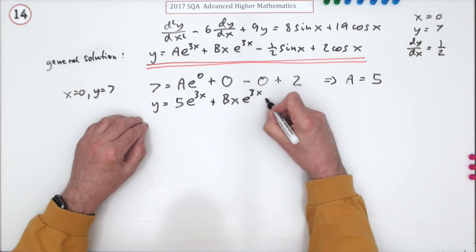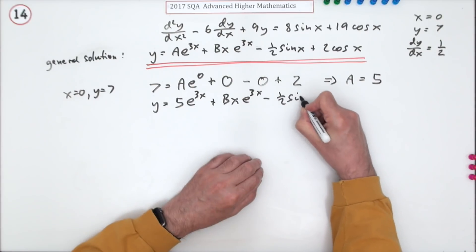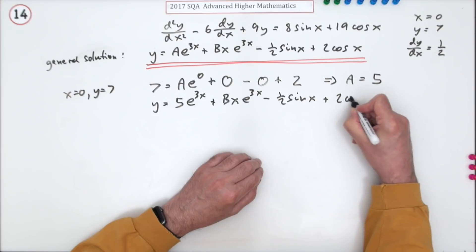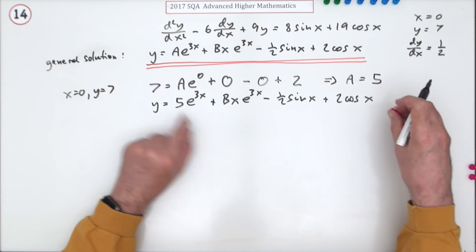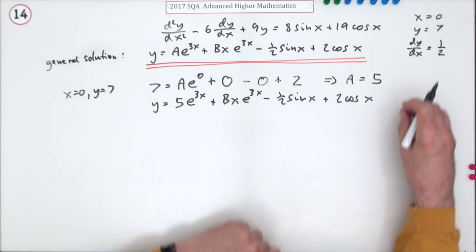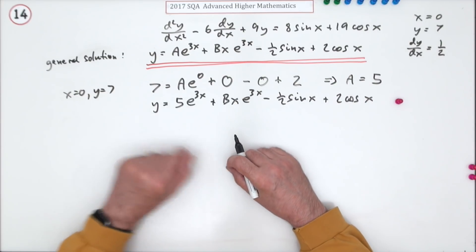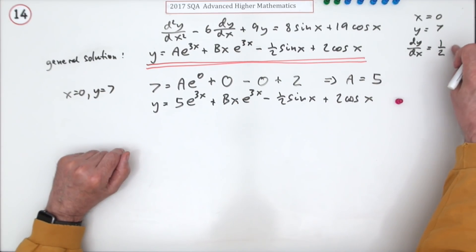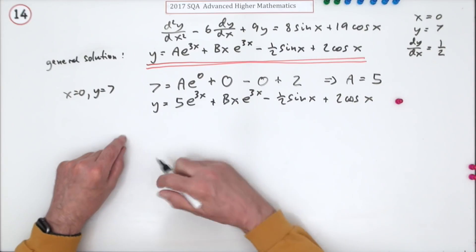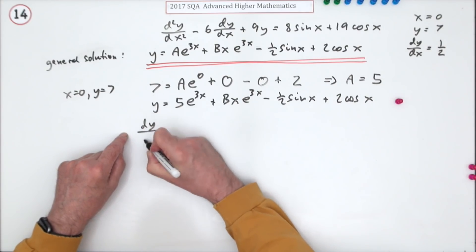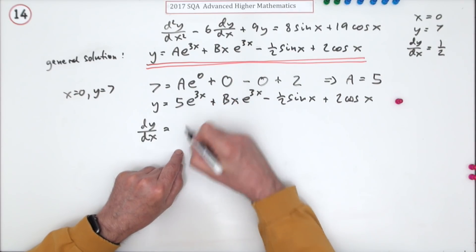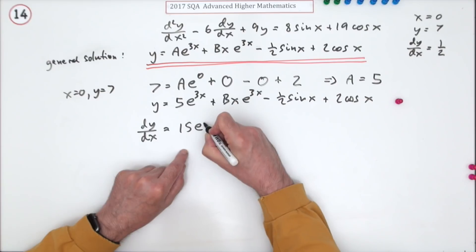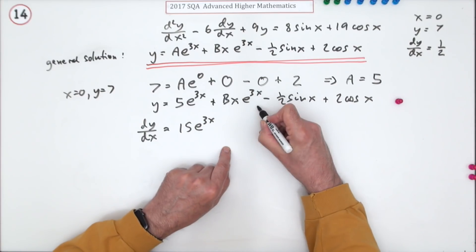Now they got the derivative of that before they started working out. I'd rather do that first - so one of the marks was for getting one of these two constants A and B, you would tend to do that one first. Then you would say right, now to use the second of the initial conditions I'll need the derivative. So you differentiate it, so dy/dx is going to be - well that's a function of a function so there's a 3 multiplying, that'll be 15e^(3x). This is a product.